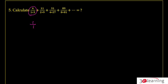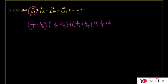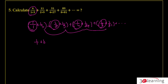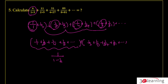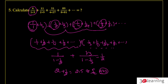Question number five: evaluate 1 + 1/3 + 1/2 + 1/9 + 1/4 + 1/27 + 1/8 + 1/81 ... to infinity. Group into two series: (1 + 1/2 + 1/4 + 1/8 + ...) and (1/3 + 1/9 + 1/27 + 1/81 + ...). The first is an infinite GP giving 2; the second is an infinite GP with first term 1/3 and ratio 1/3, giving 1/2. So the answer is 2 + 1/2 = 5/2.